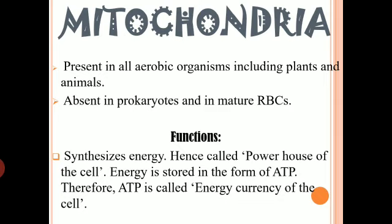The function of mitochondria — I have already told you that it is related to synthesis of energy. Because it is the site of energy synthesis, it is called the powerhouse of the cell. The energy formed in mitochondria is stored in the form of ATP, adenosine triphosphate. This ATP is called the energy currency of the cell, because for any active processes inside our body we need to spend energy, and that currency is ATP.